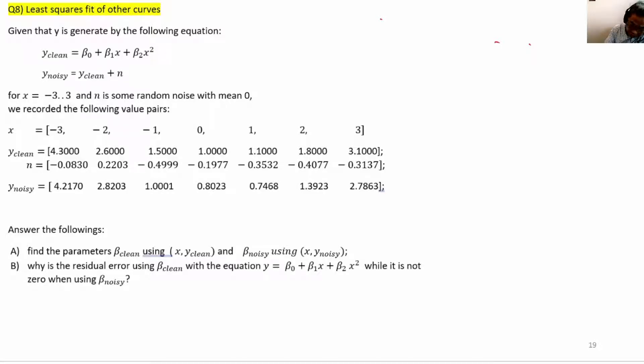This is tutorial 7, question number 8. We continue with linear models and least squares. This question differs from the previous question 7 because now we are given an equation with an extra term, x squared.